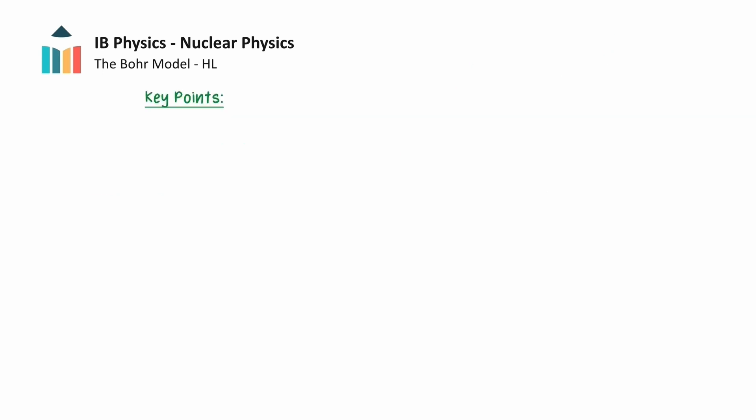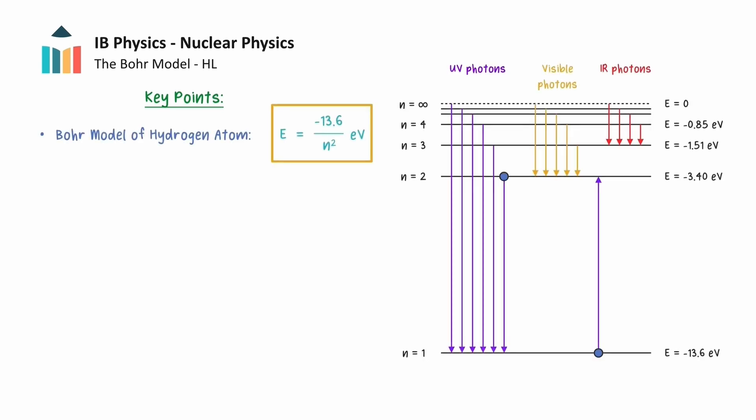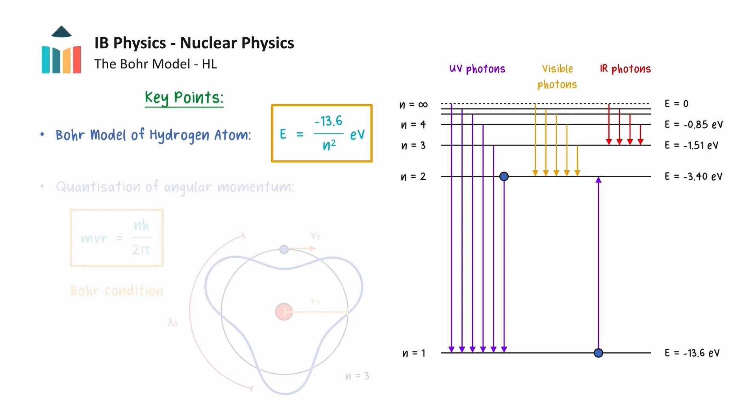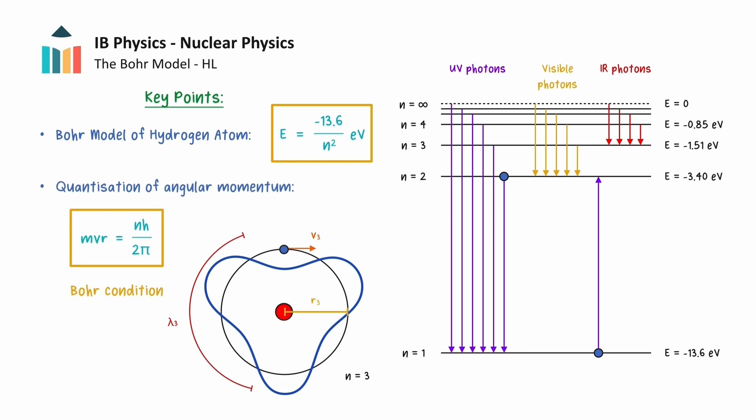We will now provide a final summary of the key understandings from this video. We saw that energy levels in the Bohr model of hydrogen could be predicted by the following equation. The existence of these definite energies showed that angular momentum can be quantized in integer multiples of Planck's constant divided by 2pi. This now concludes our video on the Bohr model.